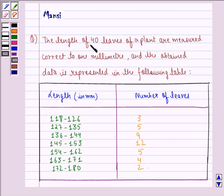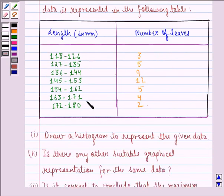The question says the length of 40 leaves of a plant are measured correct to 1 mm and the obtained data is represented in the following table. Here we have length and here we have number of leaves.